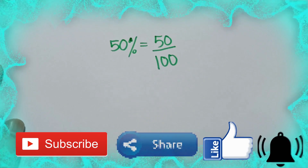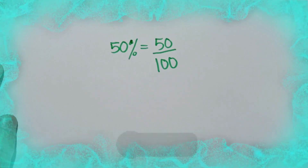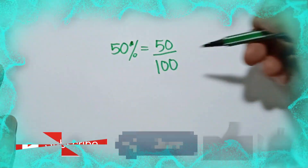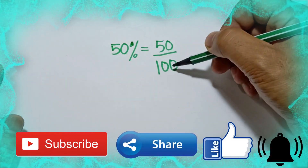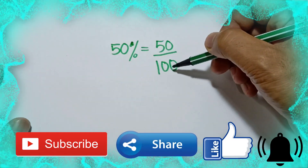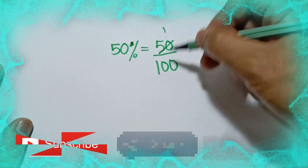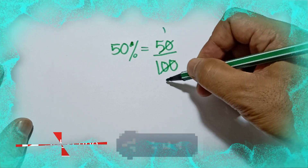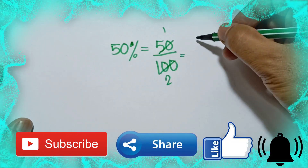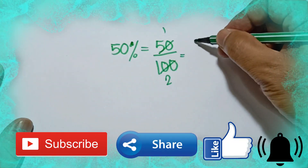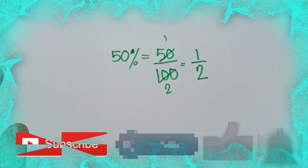So how do we simplify this fraction? We know that 50 and 100 are both divisible by 50. So 50 divided by 50 is 1, and 100 divided by 50 is 2. So 50% as a fraction is 1/2.